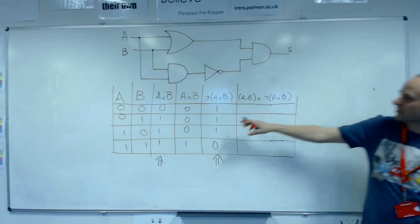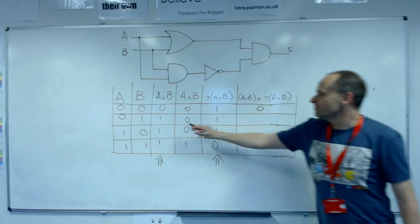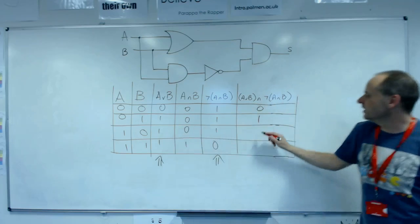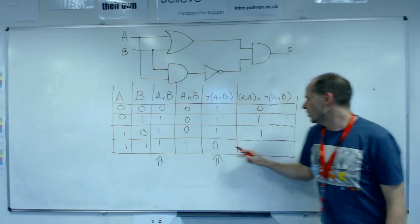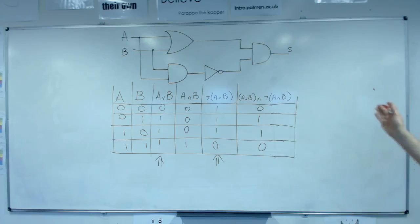Right, so we're just going to do AND of those two columns. So zero and one is zero, one and one is one, one and one is one, one and zero is zero. Okay, so that is the full truth table for that circuit.